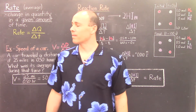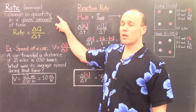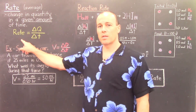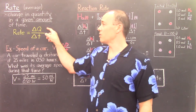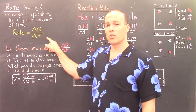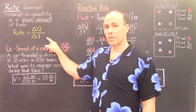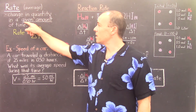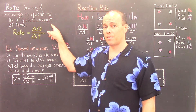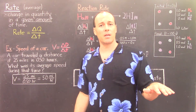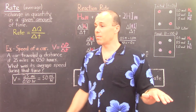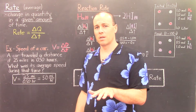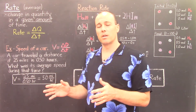In general, a rate is a change in a quantity in a given amount of time, and it's calculated as rate equals delta Q over delta T — change in quantity over change in time. It should be noted this is an average property being calculated. Later on we will discuss instantaneous rates and compare them with average rates. But for now, let's focus on the average rate.